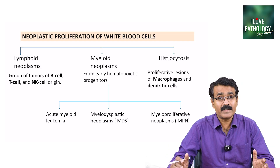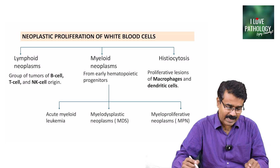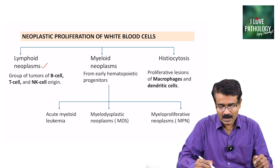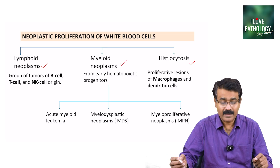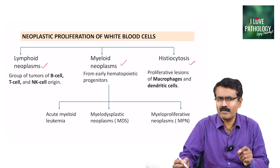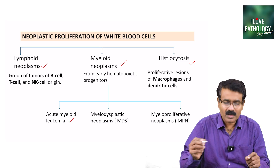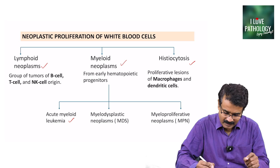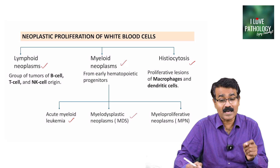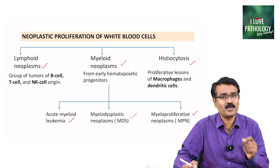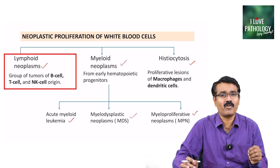We have seen this classification — the neoplastic proliferation of white blood cells is categorized into lymphoid neoplasms, myeloid neoplasms, and histiocytosis. In myeloid neoplasms, I have covered acute myeloid leukemia, myelodysplastic syndromes, myelodysplastic neoplasms, and myeloproliferative neoplasms. In today's session, let's learn about lymphoid neoplasms.